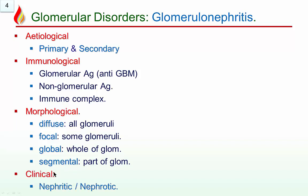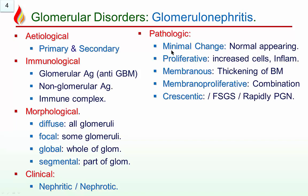Most important is the clinical classification. Clinical features of glomerular disease are classified into two major categories: nephritic syndrome and nephrotic syndrome, and others such as acute renal failure, just hematuria, and chronic renal failure. Pathologically, it can be minimal change glomerulonephritis, proliferative glomerulonephritis, membranous, membranoproliferative, crescentic, or focal segmental glomerulosclerosis.